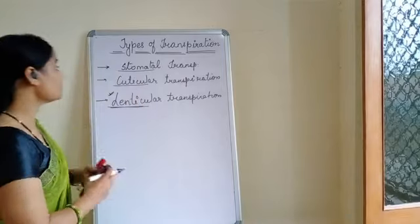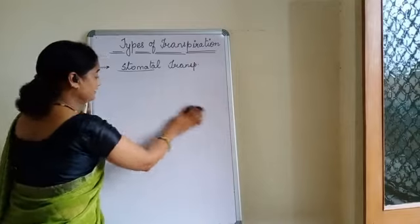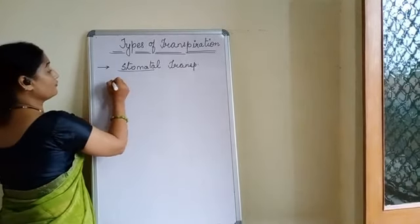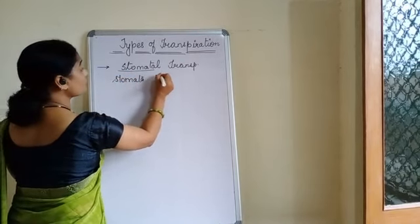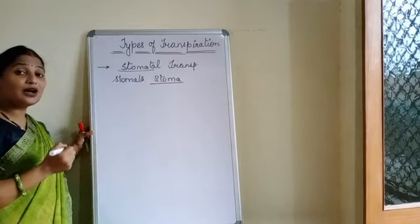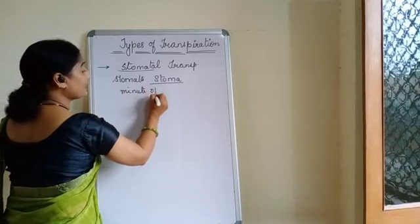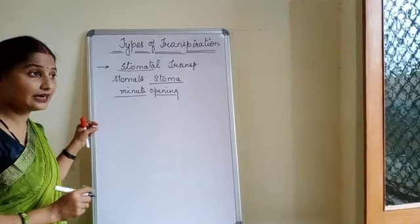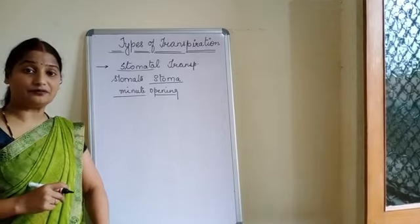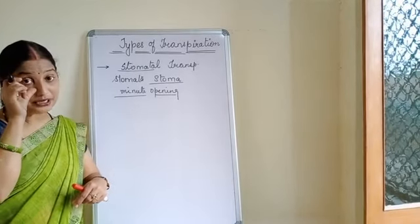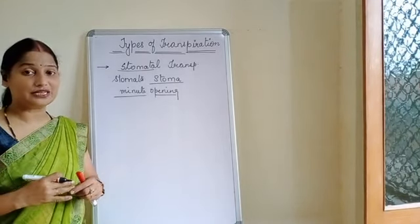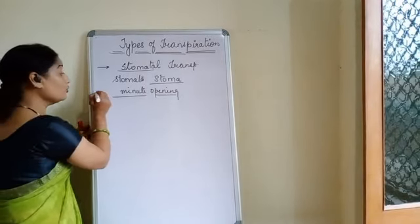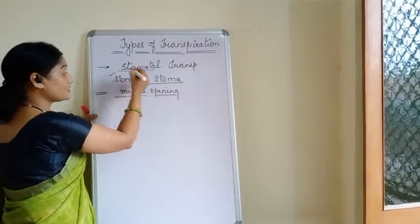We will start with Transpiration number one, that is Stomatal Transpiration. As I told you, Stomatal Transpiration is done with the help of Stomata. The singular form of Stomata is Stoma. What is the Stoma? Stoma is a minute pore, or we can say it is a minute opening on the leaf, or a minute opening in the epidermis of the leaf. At the epidermis of the leaf — that is at the top and even at the lower epidermis — there are minute openings, minute pores. These pores are called Stomata or Stoma.